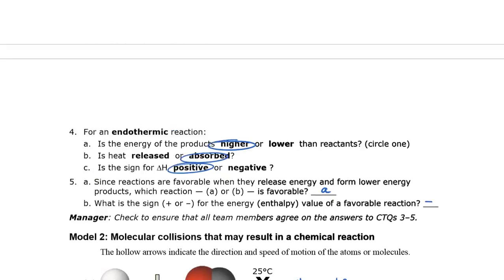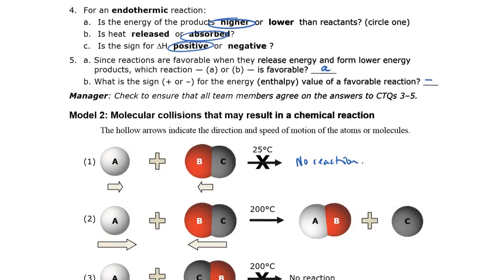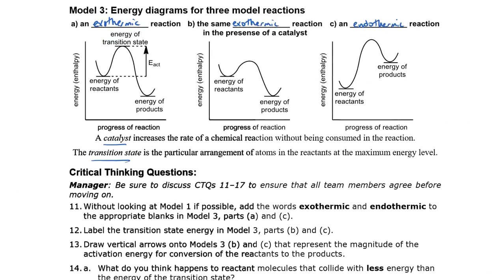The exothermic reaction is the one where the products are lower and heat energy is released. Exo means outside — like an exoskeleton is a skeleton on the outside, as insects have. If heat is given to the outside, that's exothermic. Endo means within or taken inside, so in an endothermic reaction heat is brought in. When I compare that with the diagrams in model 3, the two cases where products are lower energy are exothermic, and the one where products are higher energy is endothermic.